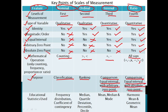Educational statistics used: nominal scale uses frequency distribution and coefficient of contingency. Ordinal scale uses median, quartile deviation, percentile, and decile. Interval scale uses mean, median, and mode. Ratio scale uses harmonic mean and geometric mean. This key points table on scales of measurement is very important from an exam point of view.